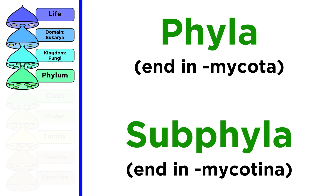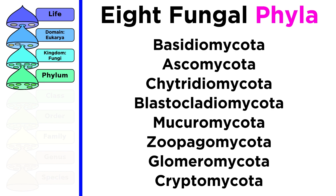In general, phyla will have the suffix mycota, and subphyla will have the suffix mycotina. In this series we will consider eight fungal phyla. These are basidiomycota, ascomycota, chytridiomycota, blastocladiomycota, mucuromycota, zoopagomycota, glomeromycota, and cryptomycota.